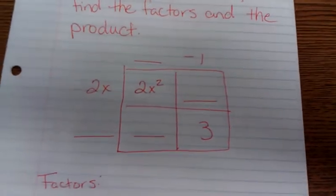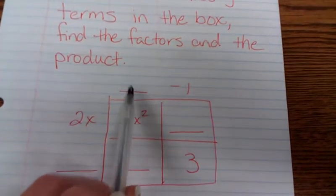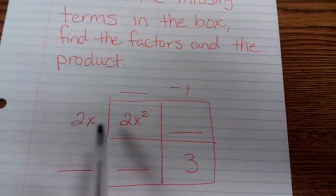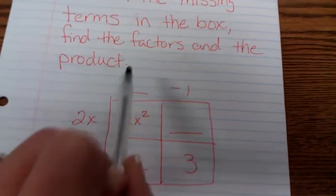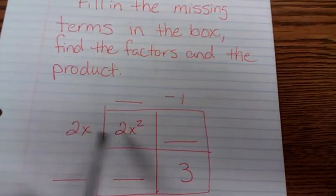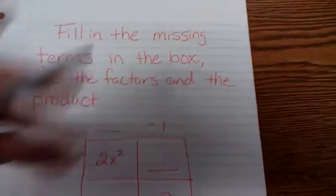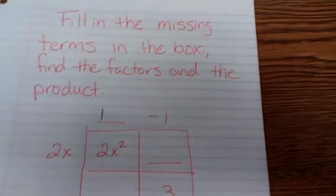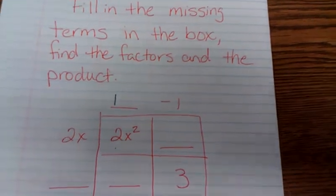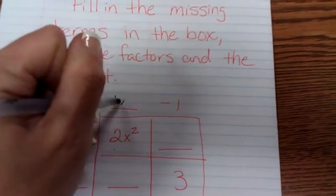Here's the box here. Now what you're trying to do is you're trying to find these missing blanks. For example, we know that you're supposed to take this times this to get what's inside here. Well, 2x times what gives you x squared? 2 times 1 gives you 2, x times x gives you x squared, so it's x.